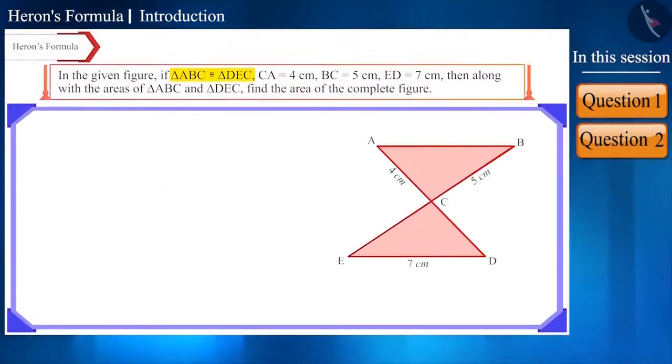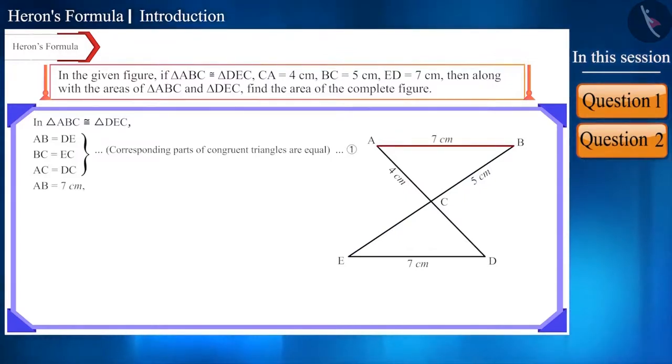Here, we are given the triangle ABC and the triangle DEC are congruent. Also, in the figure, we know that the length of some of the sides, so along with the areas of triangle ABC and triangle DEC, we need to find the area of the complete figure. Friends, as is given in the question, triangle ABC and triangle DEC are congruent and we know that corresponding parts of congruent triangles are equal, which means their corresponding sides will be equal. Hence, AB is equal to DE, BC is equal to EC and AC is equal to DC. So, the length of the side AB will be 7 cm and in the triangle DEC, the length of EC will be 5 cm and the length of DC will be 4 cm.